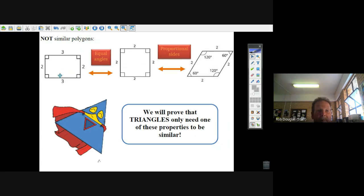Well, you can have a rectangle that's two at the end and then three in the middle, two by three. This could be two by two. They're not similar polygons even though they have equal angles.